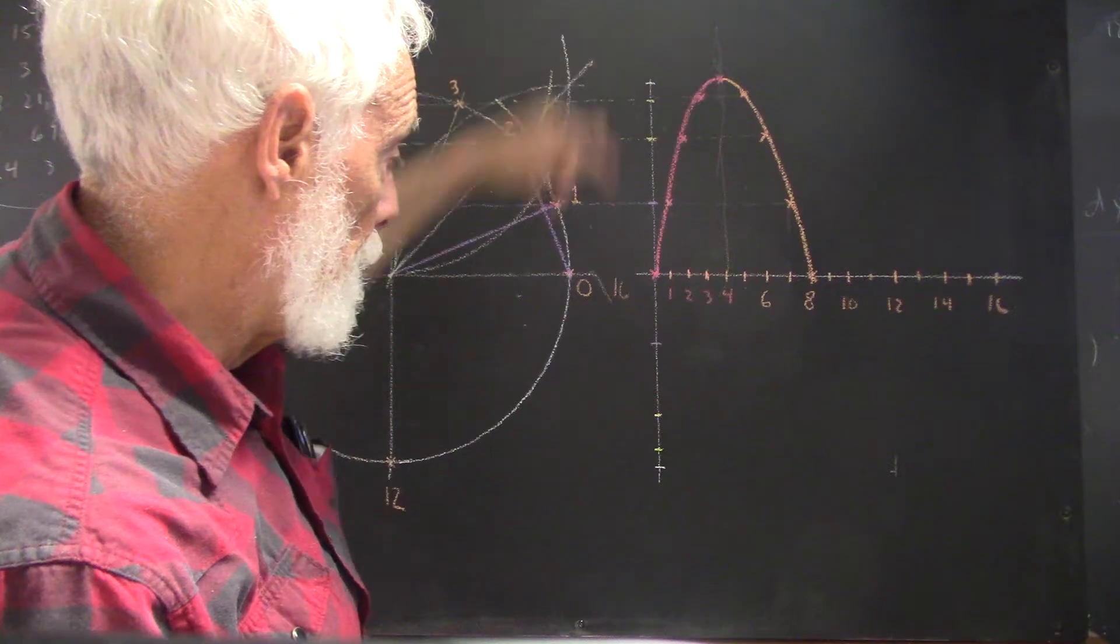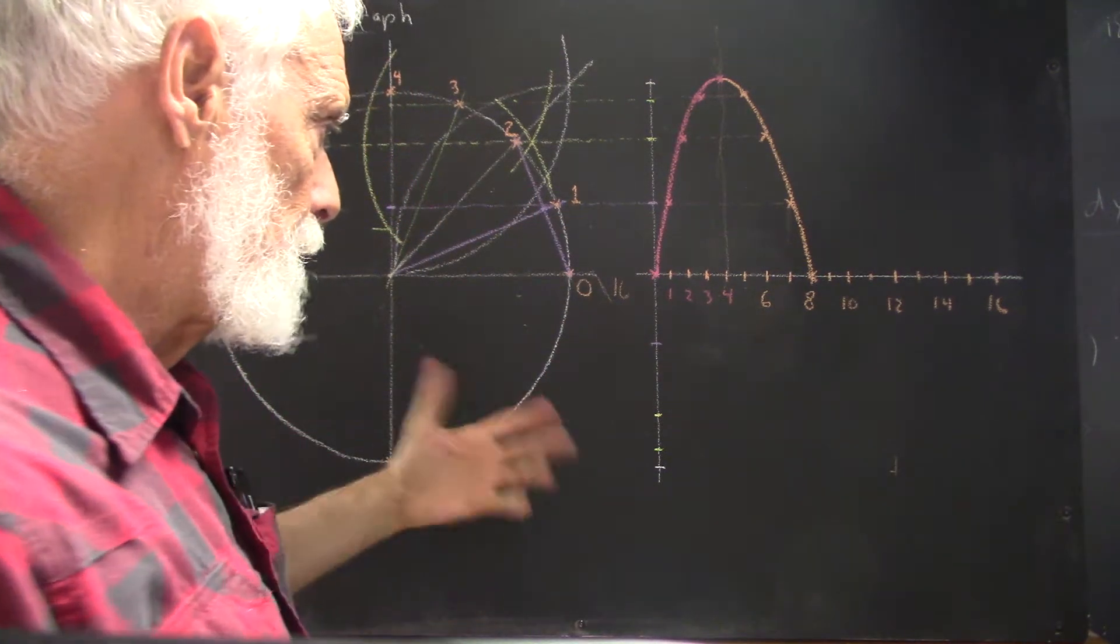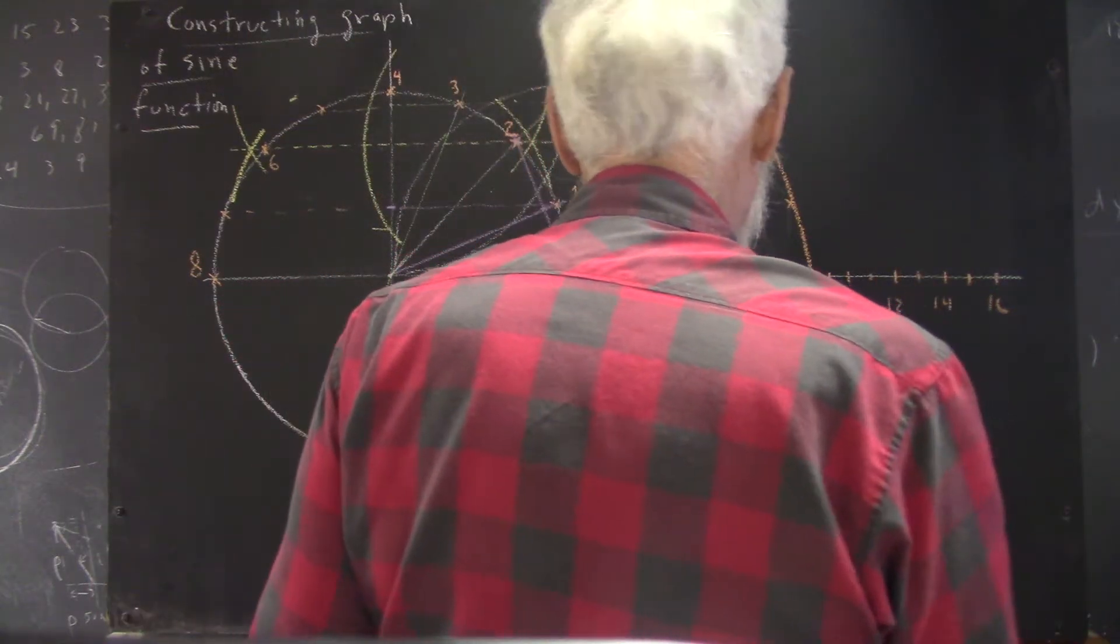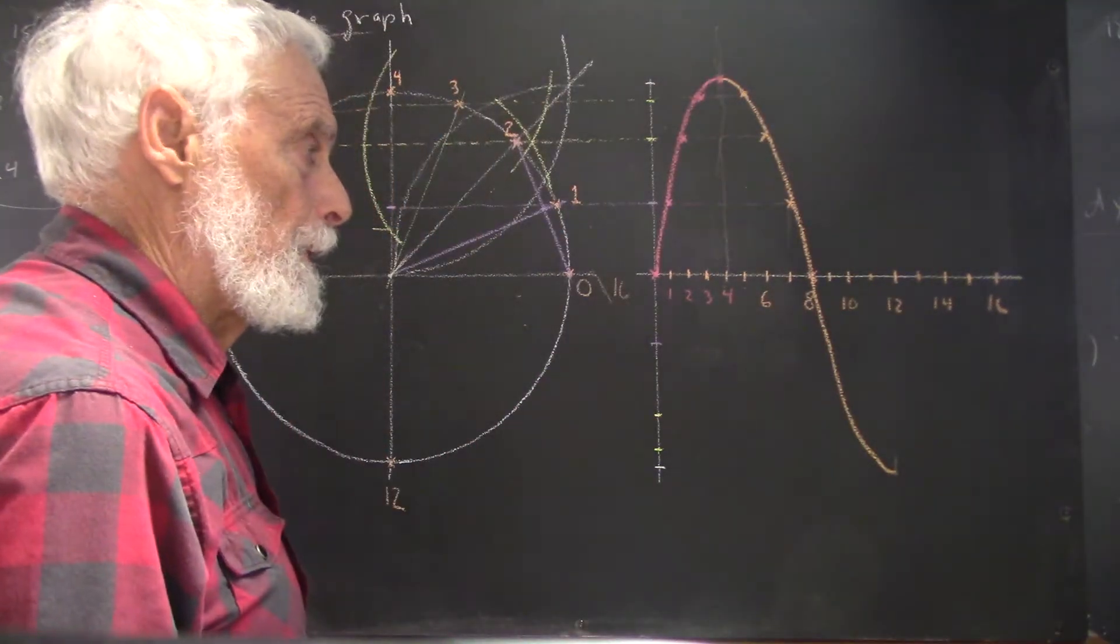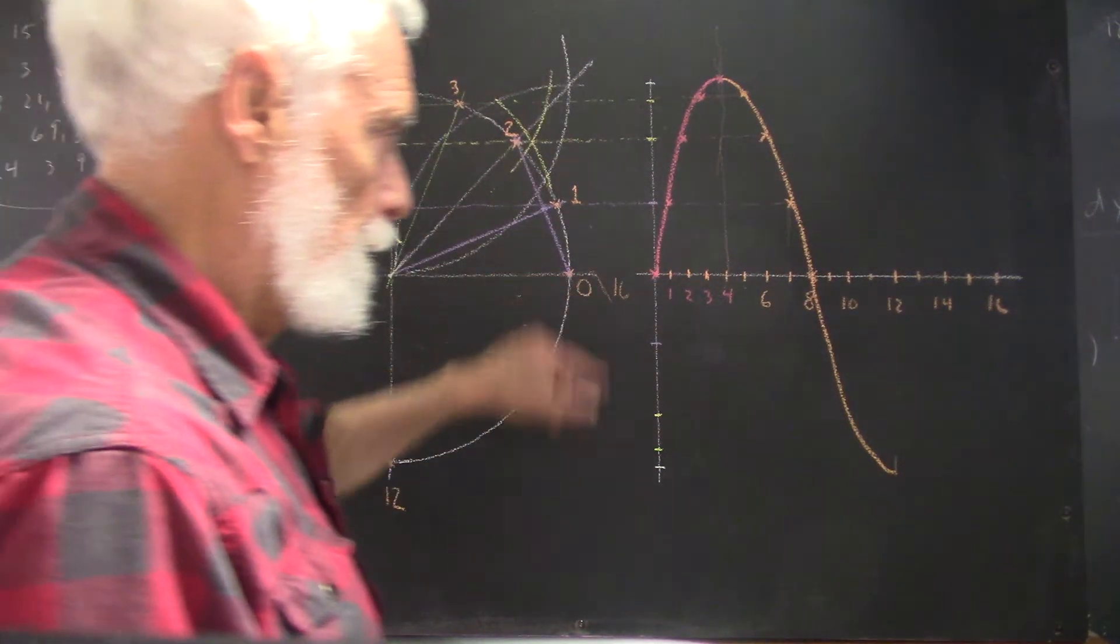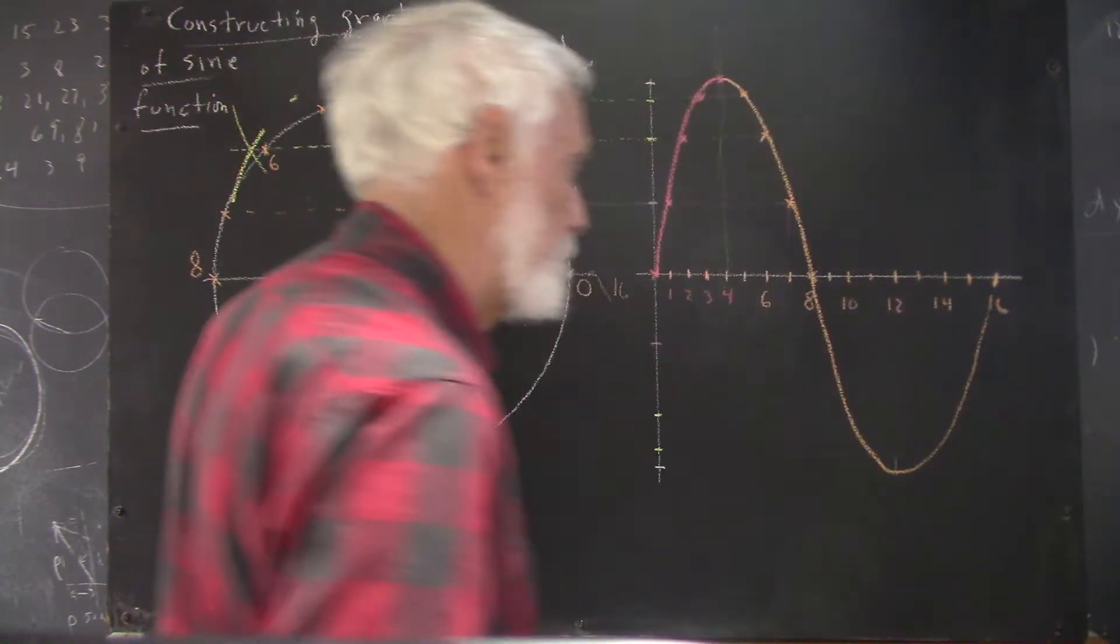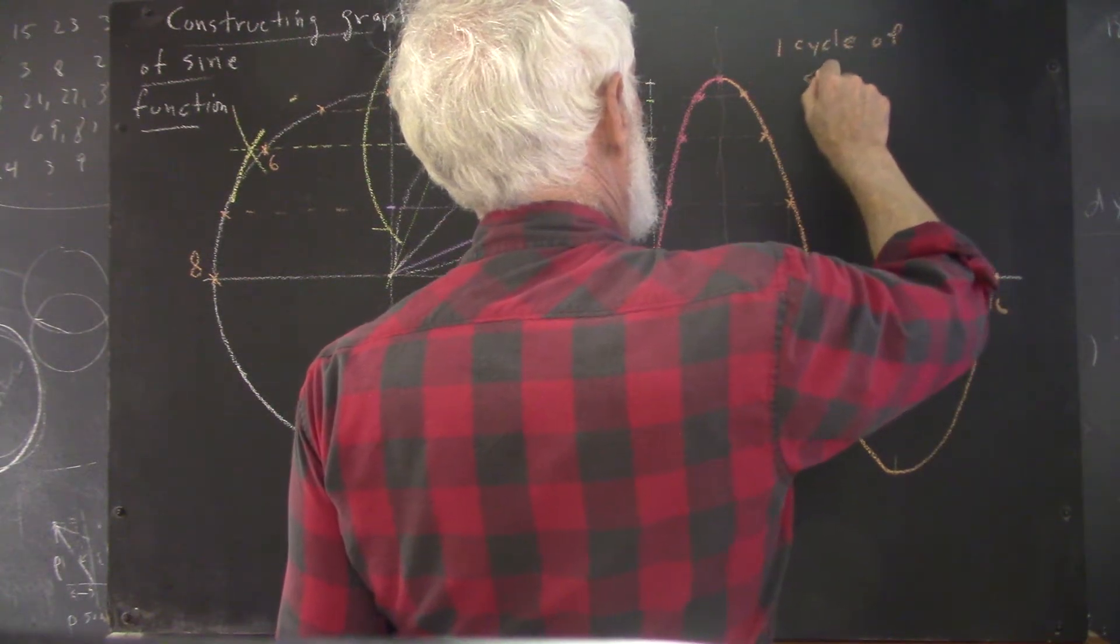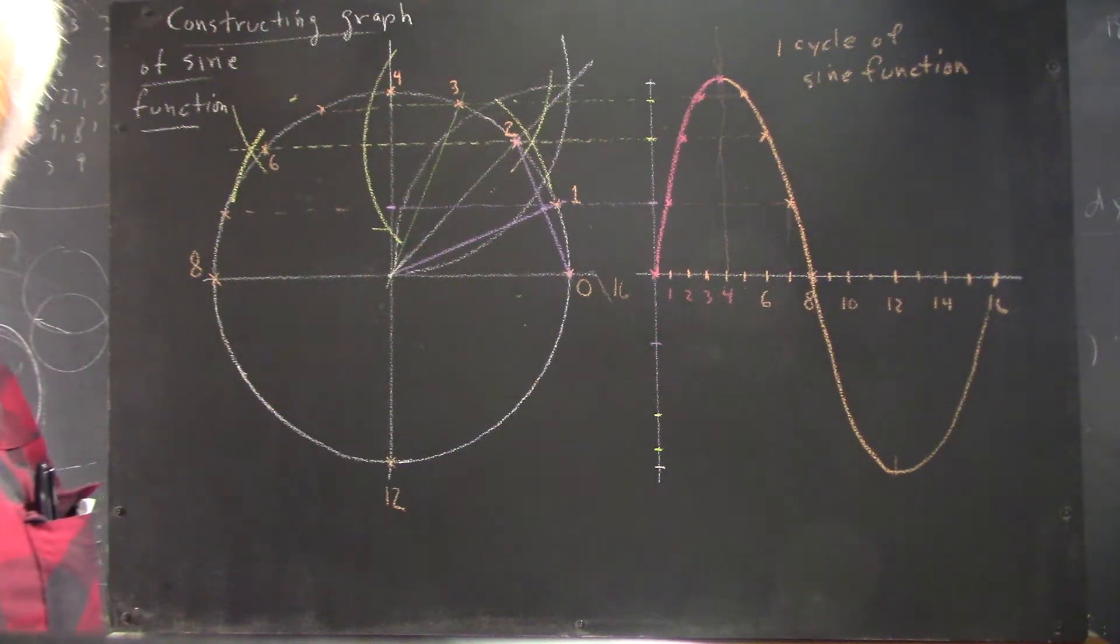If we continue now, we're going to go through negative y values. So I've got negative y values here in the same colors I have the positive y values. I didn't construct these with the compass, I just kind of eyeballed them. And it should be clear that I'm going to have another kind of an upside-down symmetry here, as I go through the third quadrant and then as I go through the fourth quadrant I turn around and come back up. And now I've got a complete graph of one cycle of a sine function.